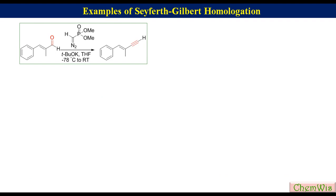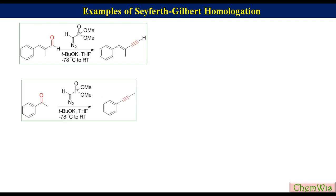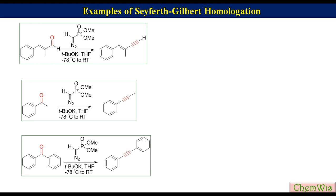Conversion of acetophenone to prop-1-yn-1-ylbenzene and conversion of benzophenone to 1,2-diphenylethyne are examples of the conversion of a ketone to an alkyne using Seyferth-Gilbert homologation.